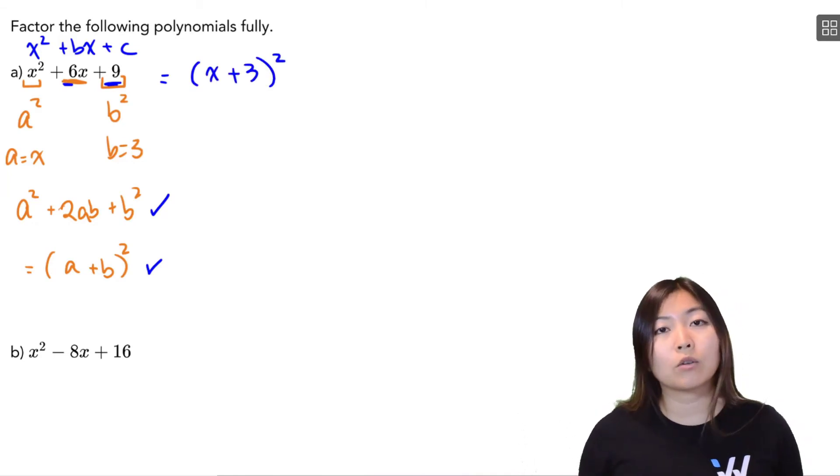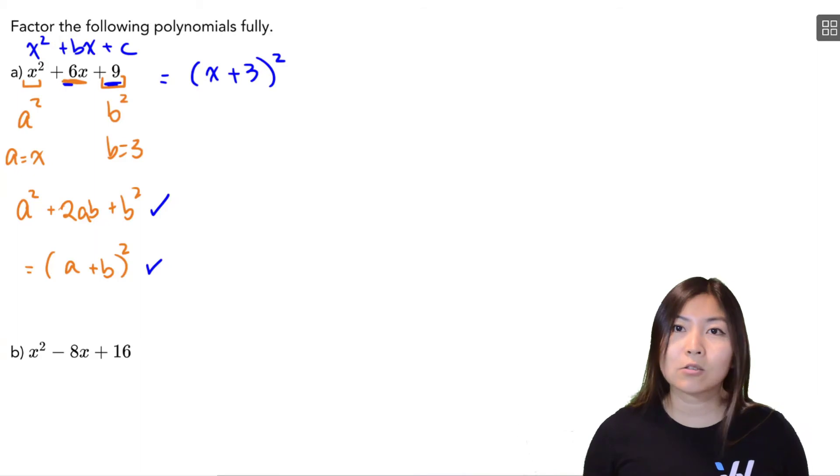You could have factored this using a regular simple trinomial as well. You'll notice that you'll get x plus 3 times x plus 3. And I'll leave it as an exercise for you to do the check. If you multiply x plus 3 times x plus 3, you will end up back at x squared plus 6x plus 9.